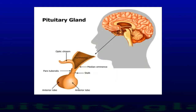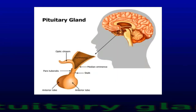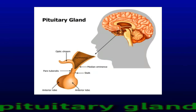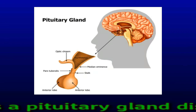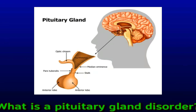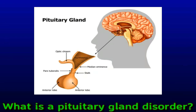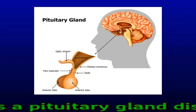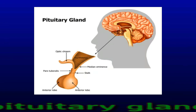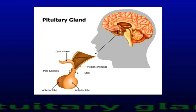What is a Pituitary Gland Disorder? The pituitary gland is a small pea-shaped gland that sits at the base of the brain. A pituitary gland disorder occurs when the pituitary gland makes too much or too little of certain hormones. The pituitary gland manages multiple hormones in the body, allowing the typical function of other glands and helping regulate growth, metabolism, stress response, and sex organ function.